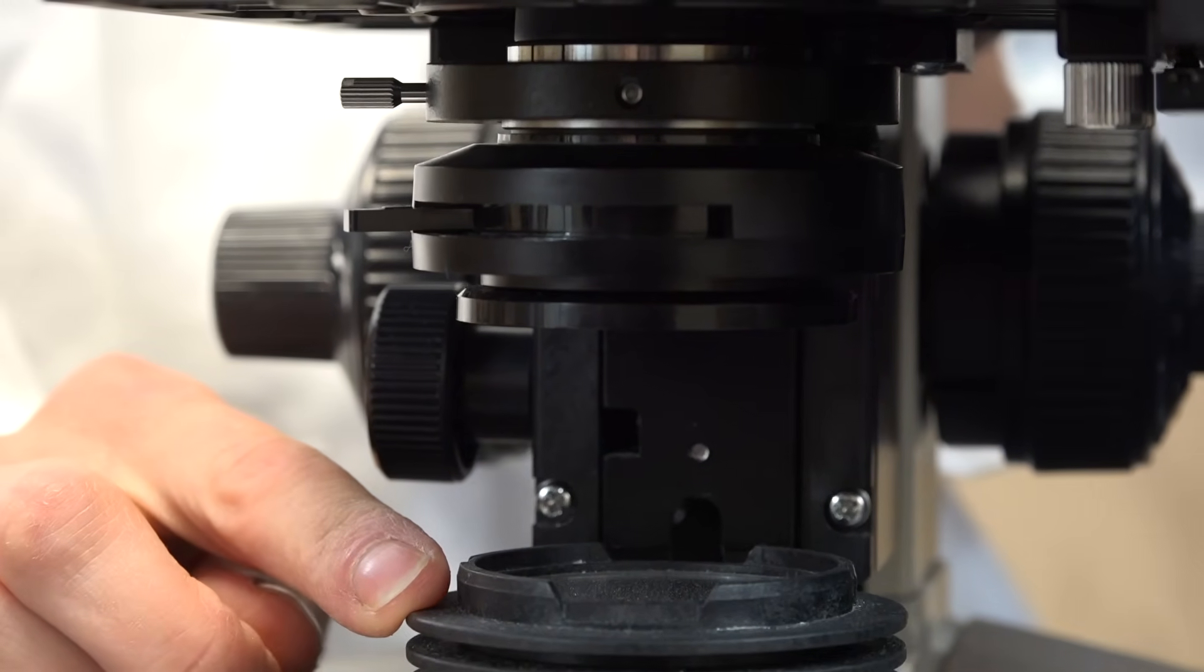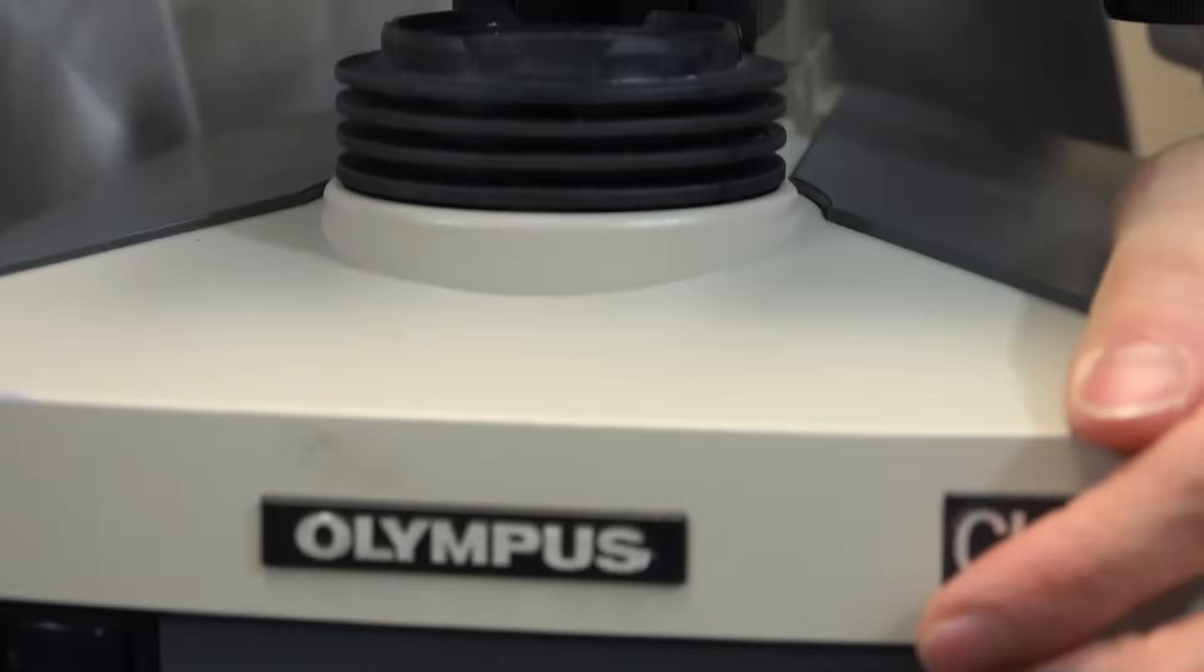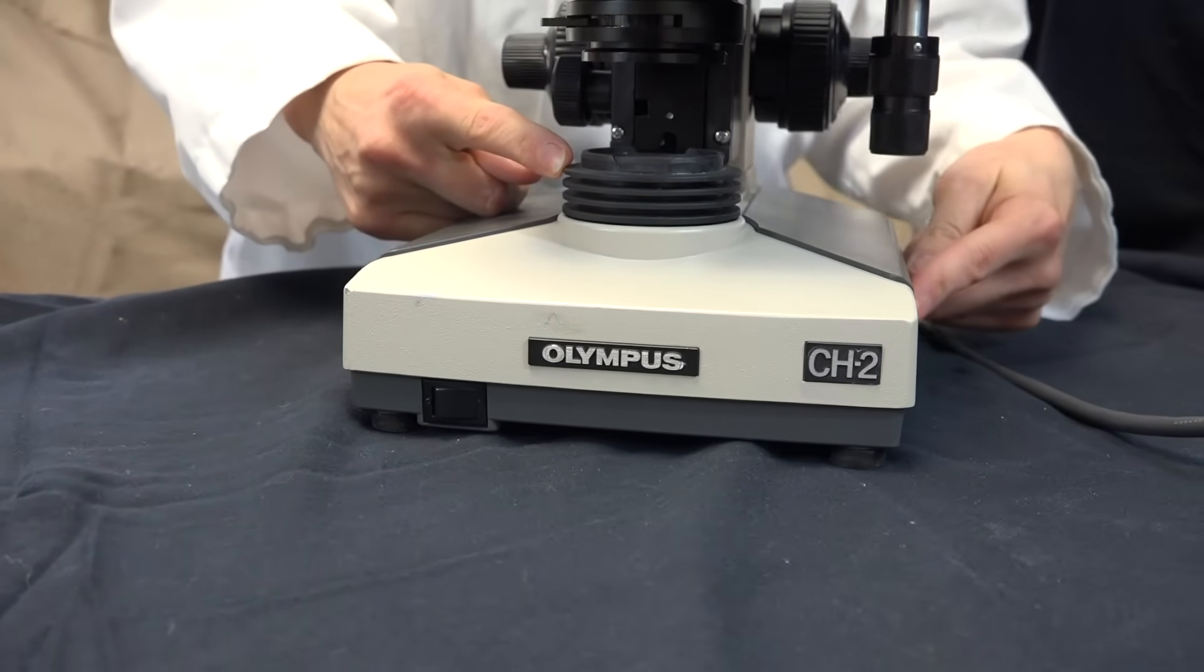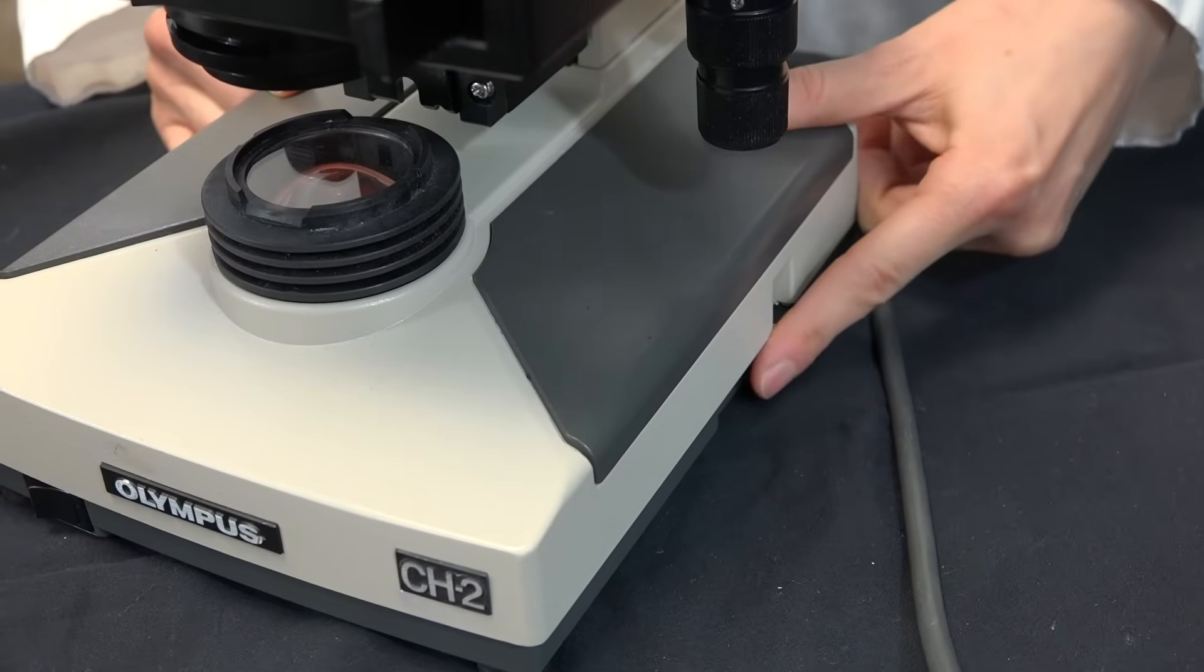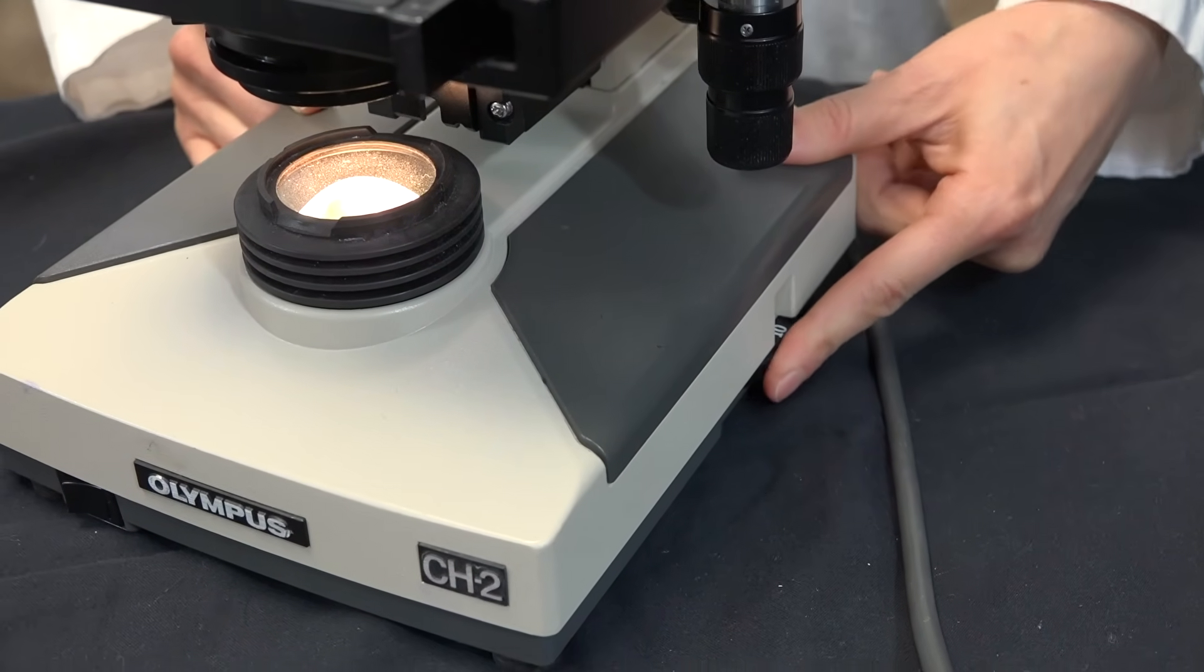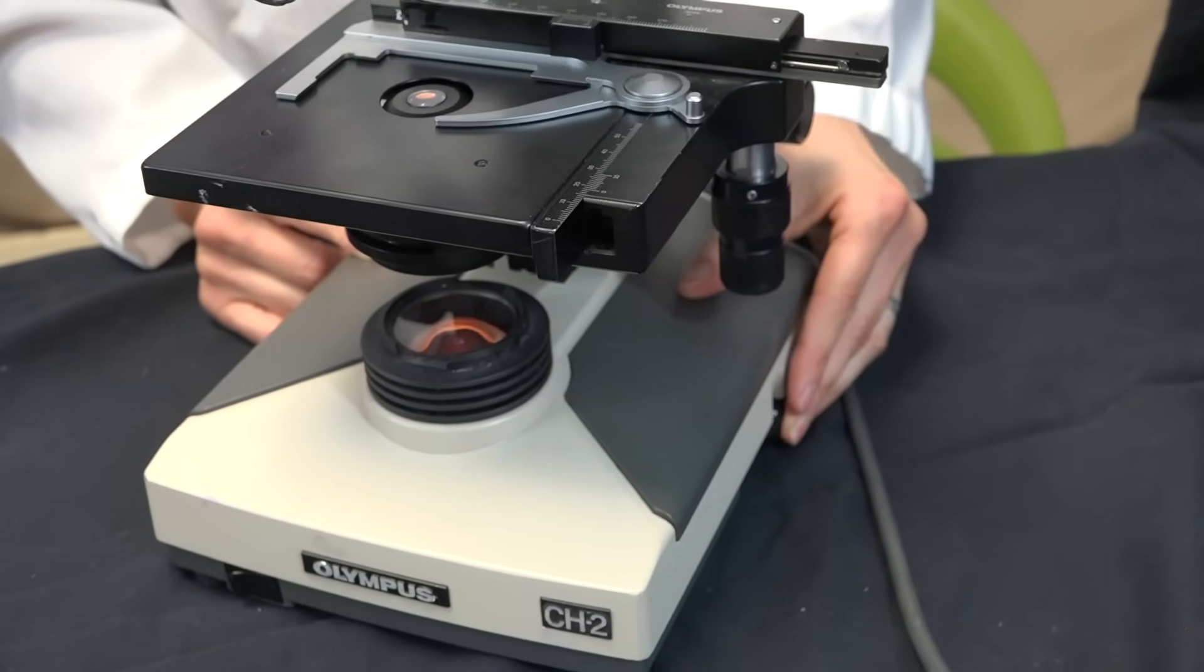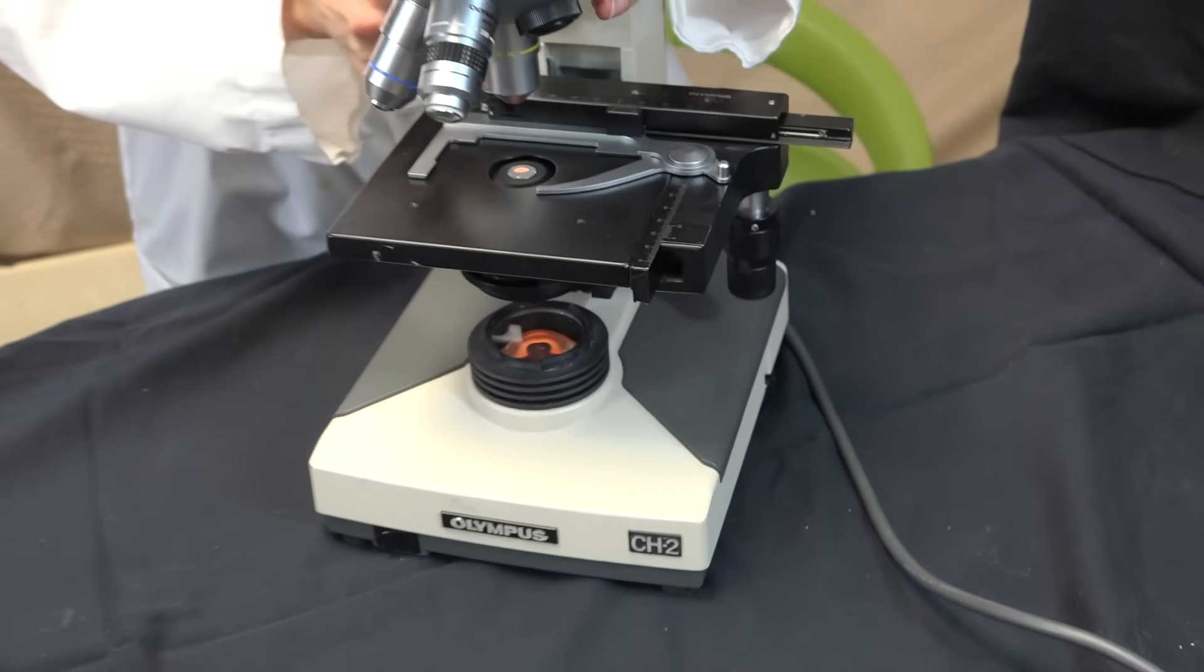Directly below the condenser is the light source. On the front of your microscope there is a switch which will turn on the light source and on the side of the microscope there is a dial. Turning this dial up increases the brightness of the light source. When you use your microscope it's best to start with the light relatively low and start with the lowest power objective in place.